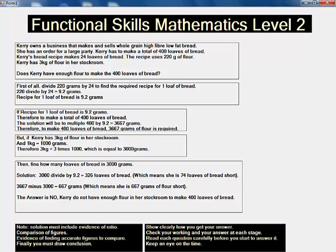Carrie owns a business that makes and sells whole grain high fiber low fat bread. She has an order for a large party. Carrie has to make a total of 400 loaves of bread. Carrie's bread recipe makes 24 loaves of bread. The recipe uses 220 grams of flour. Carrie has 3 kilograms of flour in her stockroom.